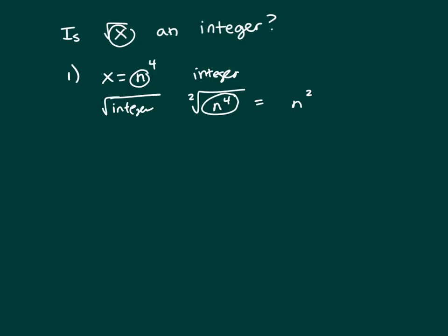Or you can think of it as what times what will give you the n to the 4th, and it will be n squared times n squared. And we already know that n is an integer, so when you square that integer, it's still an integer. So clue 1 works.